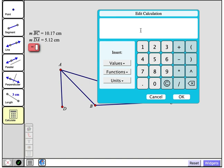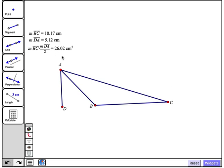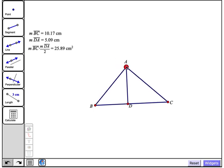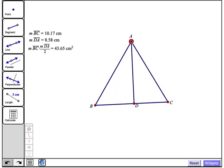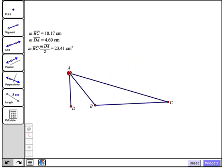So with Web Sketchpad, rather than type these numbers directly into the calculator, I can simply tap directly on BC to enter that measurement into the calculator, and then tap on the measurement of DA, multiplying them together, and since we're finding the area, I will divide by 2. So here is our area for this particular triangle, and notice that if I drag point A, for example, the area is automatically updated.